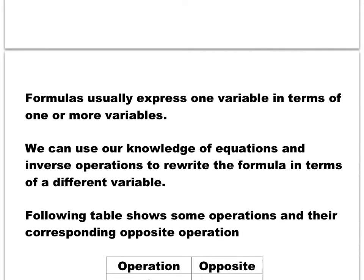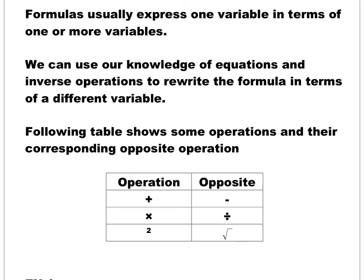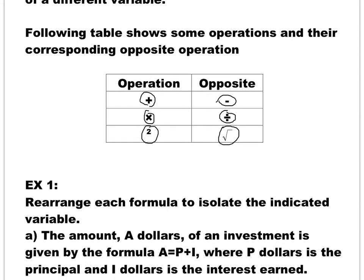If you remember from grade 9, we said that the operation addition has the opposite operation which is subtraction. Or subtraction, the opposite operation to it is addition. The same way, multiplication, opposite to multiplication is division, and opposite of division is multiplication. We also know that the opposite to square operation is square root, or opposite to square root is squaring. Knowing these facts, it's very easy to isolate one variable in terms of another one. So let's do a few examples here.